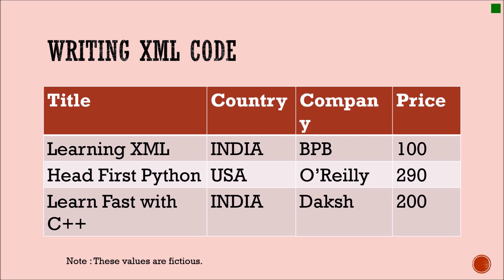There is a separate video in the playlist where you can learn how to write XML code. In this example, title, country, company, and price are the field names, and three records of a table are shown. This video also explains the practical way of writing XML and CSS code.